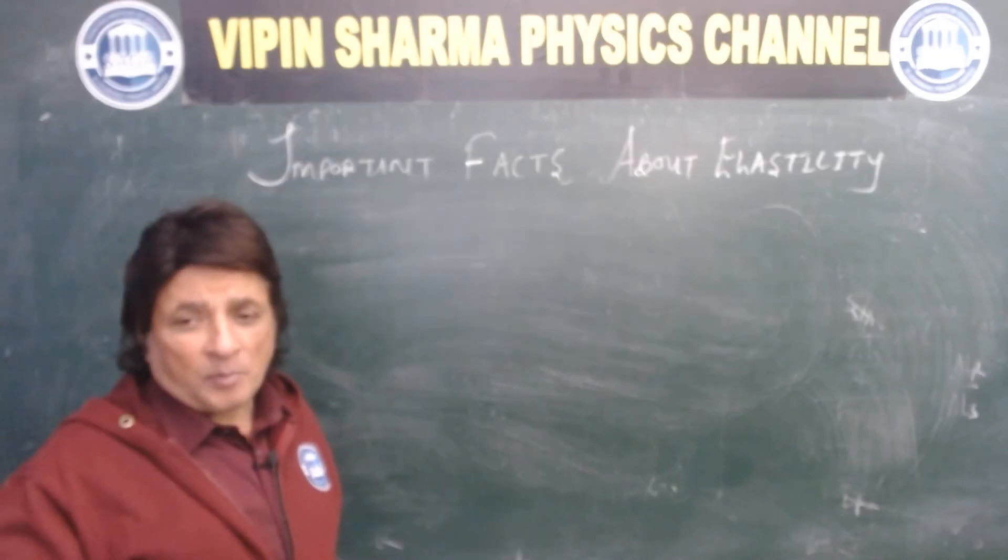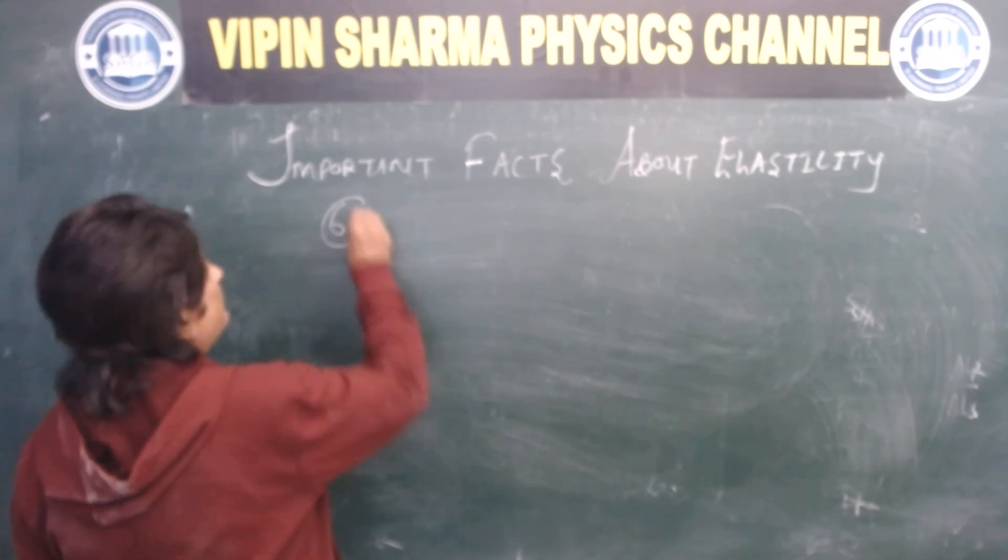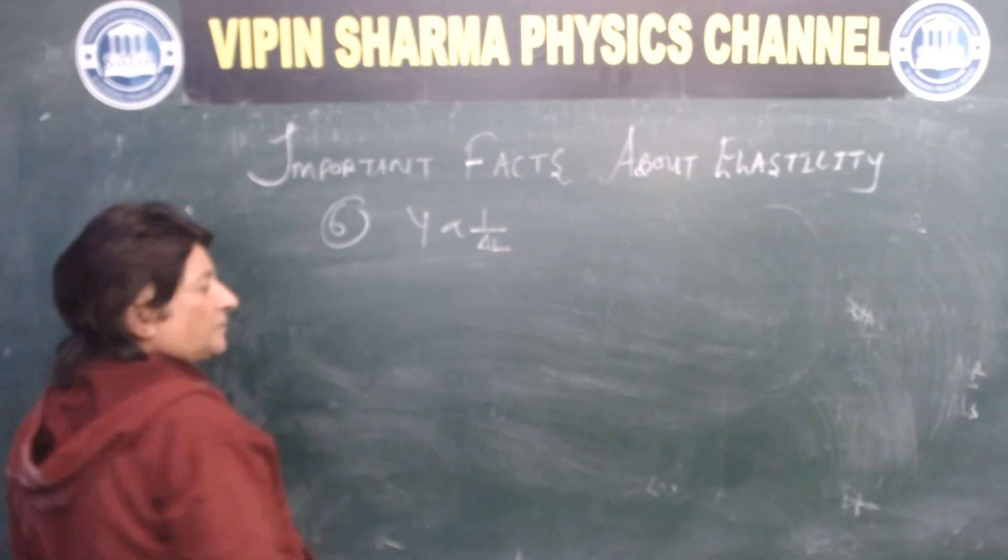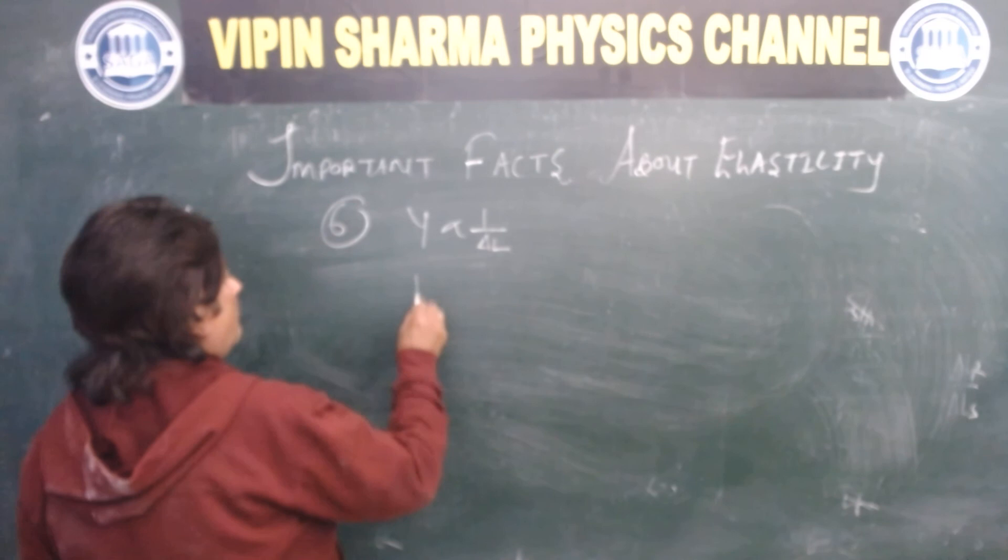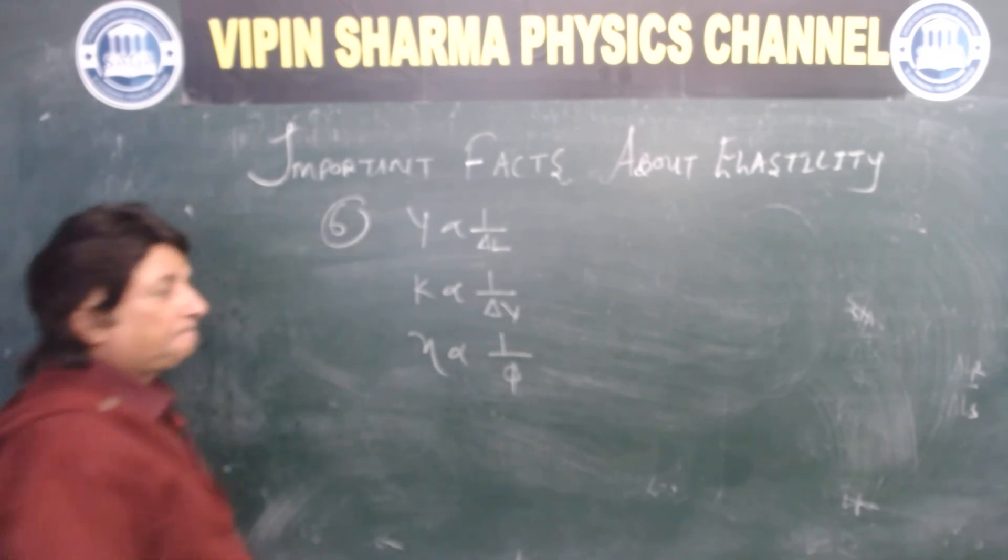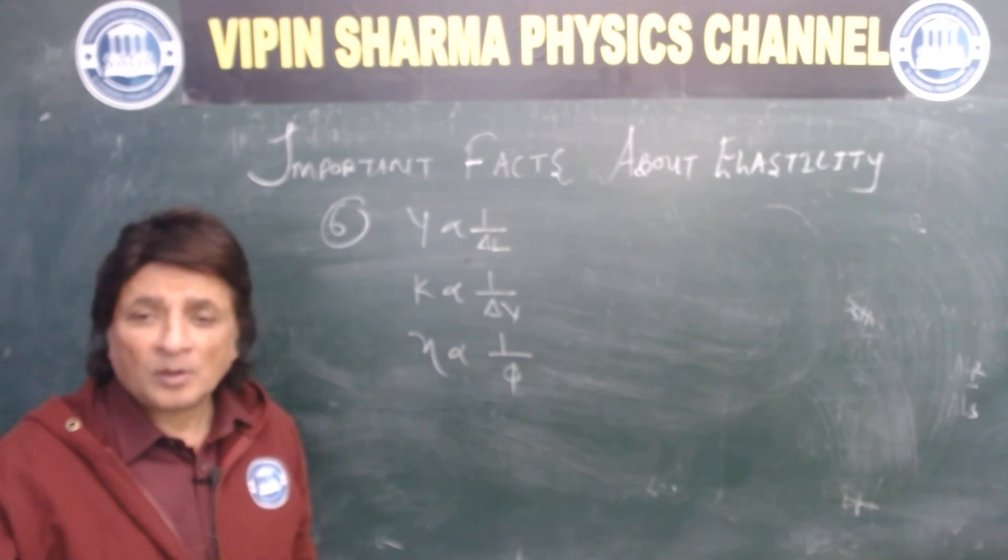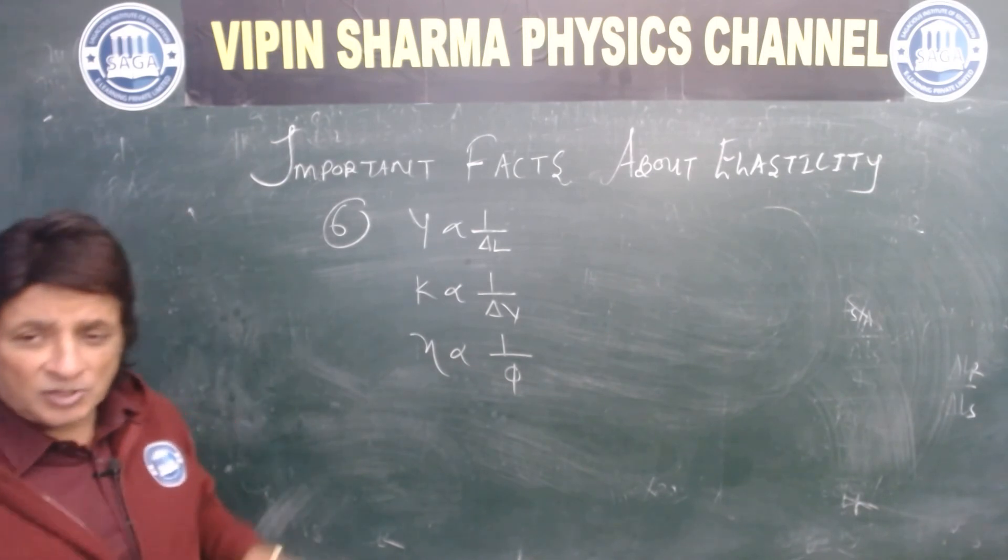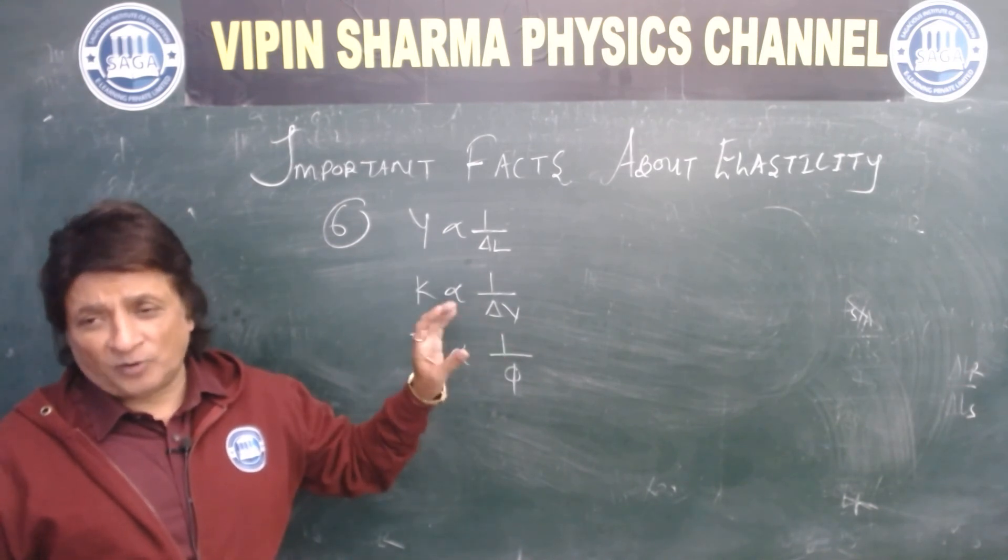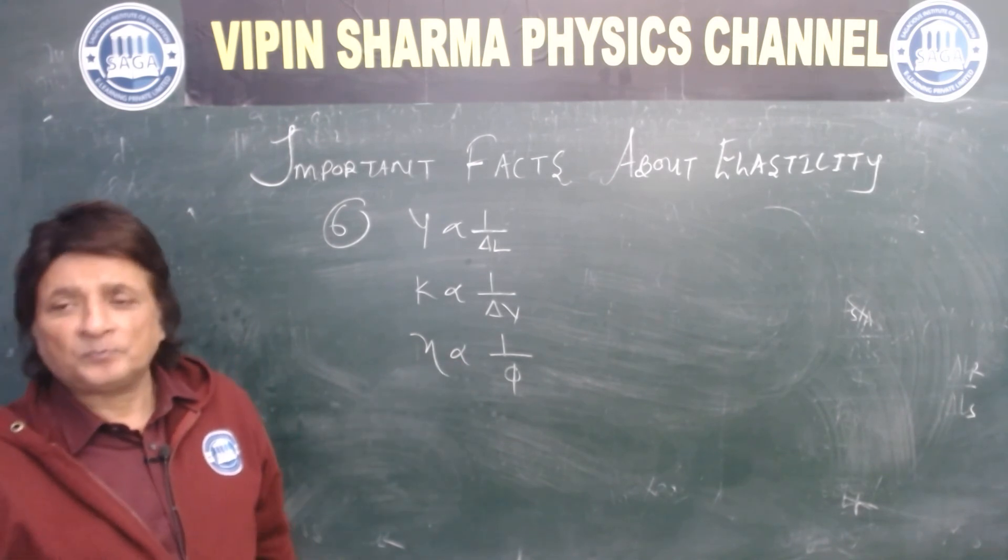Fact six. I just proved steel is more elastic than rubber. So fact number six is: Y is inversely proportional to delta l, change in length. Bulk modulus is inversely proportional to change in volume, and eta is inversely proportional to phi. So the less the change in length, the more the Young's modulus. The less the volume is compressed, the less the volume decreases, the more the bulk modulus. This is fact number six.